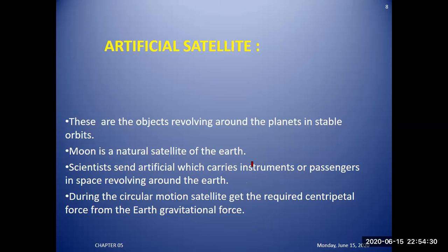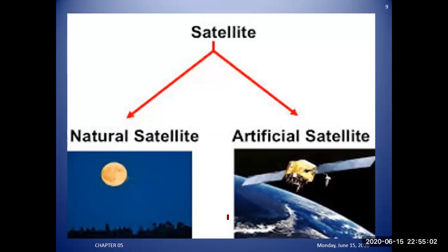Another topic to understand is artificial satellites. These are objects revolving around planets in stable orbits. The moon is a natural satellite of the earth. Scientists send artificial satellites which carry instruments or passengers into space, revolving around the earth. During circular motion, a satellite gets the required centripetal force from the earth's gravitational field. Man-made satellites are released into space for different purposes: finding locations, communication systems, and studying the internal structure of the earth using satellite images.